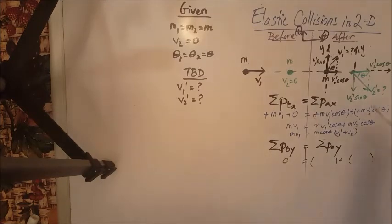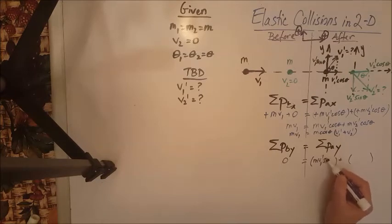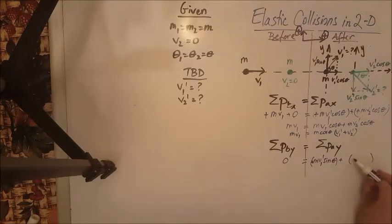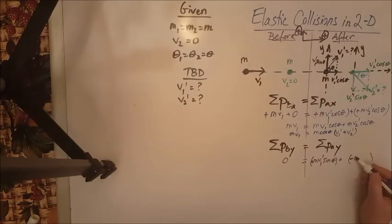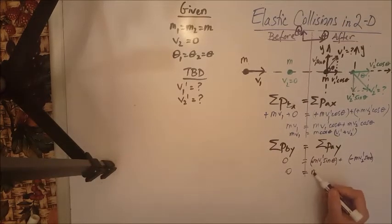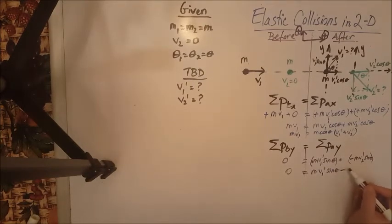One will be positive, this one going up, which is MV1 prime sine theta. That's my positive one. And the other one is going to be negative. It's going downwards. So negative MV2 prime sine theta. When we simplify this, we get zero equals MV1 prime sine theta minus MV2 prime sine theta.